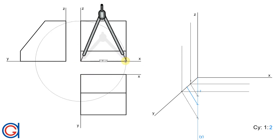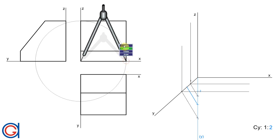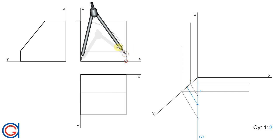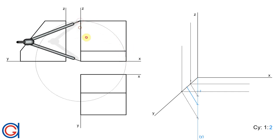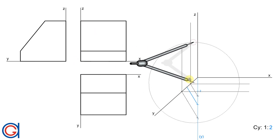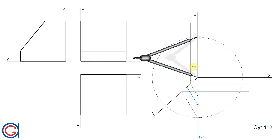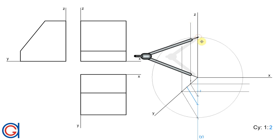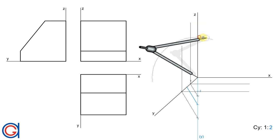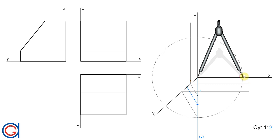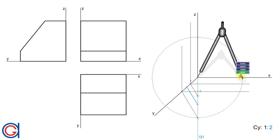Now we set the compass to the total dimension of the object on the X axis on the elevation view, which is also equal to the length on the Z axis, as can be seen here. We transport this length to the X axis on the cabinet projection. Note that these two axes, X and Z, have not been reduced.